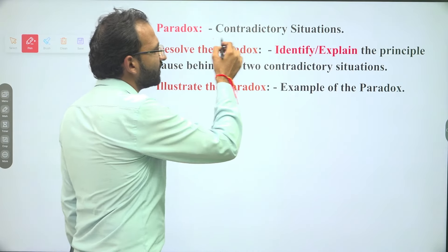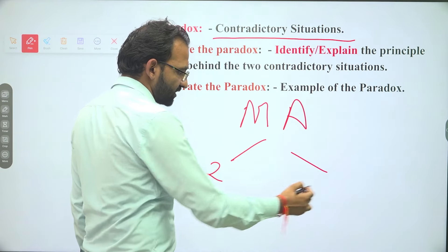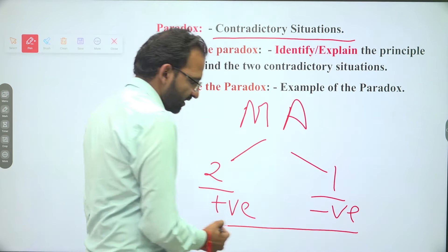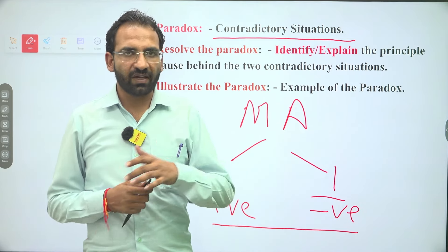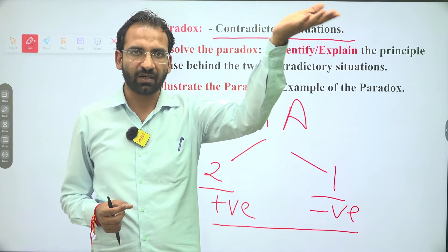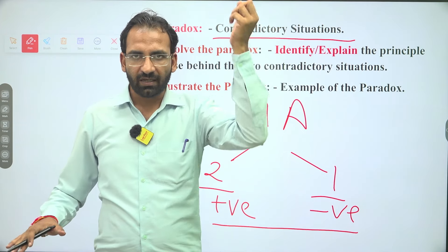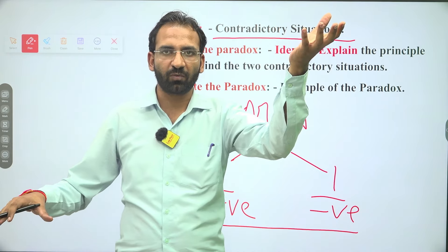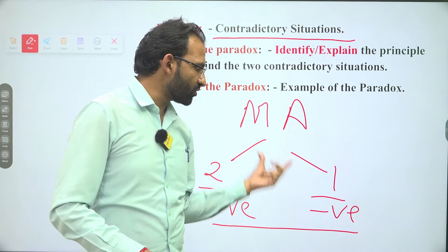Contradictory situation — when the main argument is related, you have two different points: one is positive and one is negative. For example, Mr. X is very studious and studying hard — around 10 hours a day — and still he is not getting a good score in his mocks. He is studying hard but still not getting good scores. Here is a positive point and a negative point — this is a paradox. Contradictory situation related to main argument.